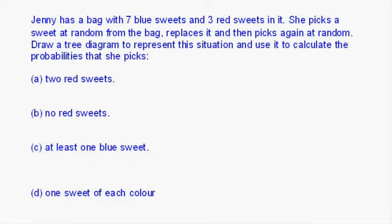A, two red sweets. B, no red sweets. C, at least one blue sweet. D, one sweet of each colour. Well, let's start off by drawing our tree diagram.